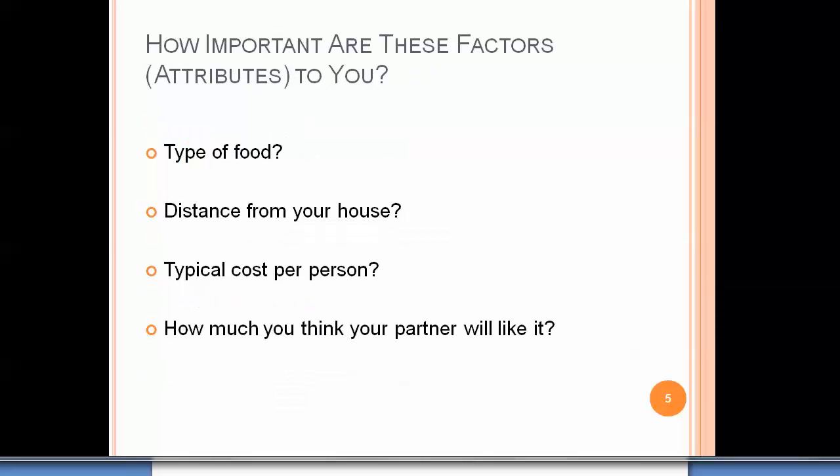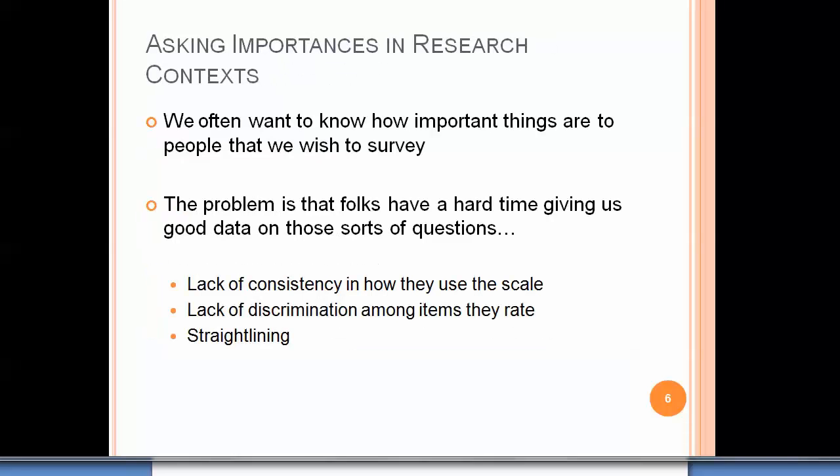In market research, we might approach this type of problem by giving you a survey and asking how important these attributes are to you: the type of food, the distance from your house, the typical cost per person, and how important it is that your partner likes it. The problem is that respondents have a hard time giving us good data on these importance questions. There's typically a lack of consistency in how they use the scale, called scale use bias. There's often a lack of discrimination among the items they rate — they often say that most everything's important. And a lot of respondents will just straight-line because they're bored or don't want to engage in the survey.